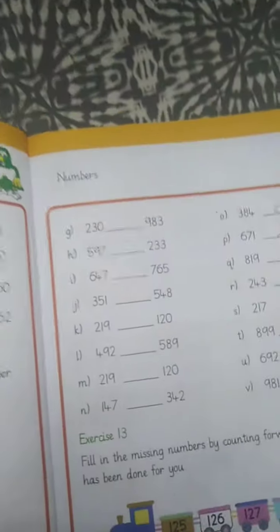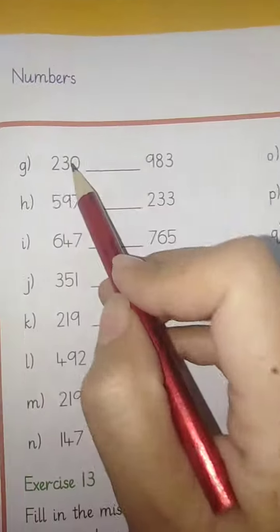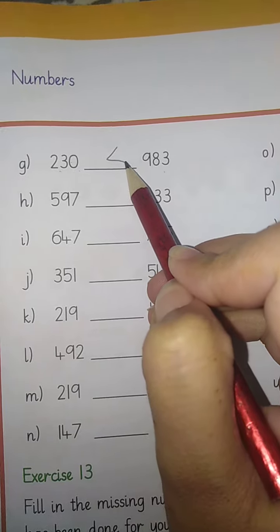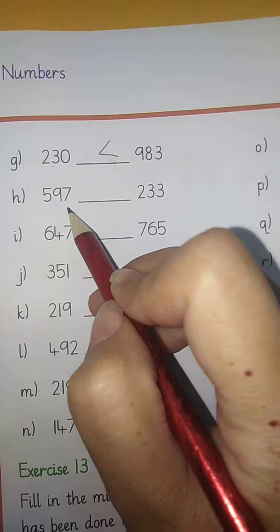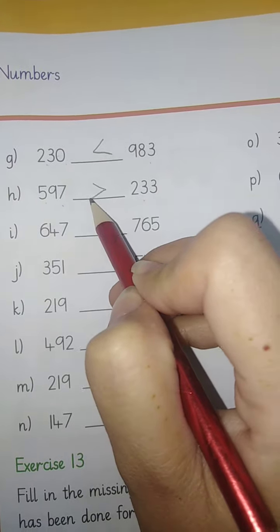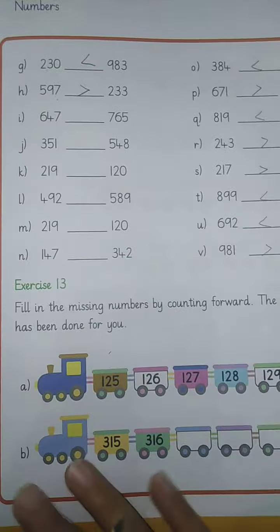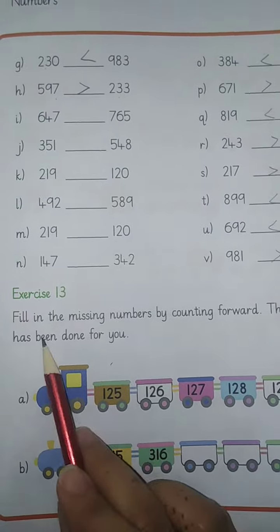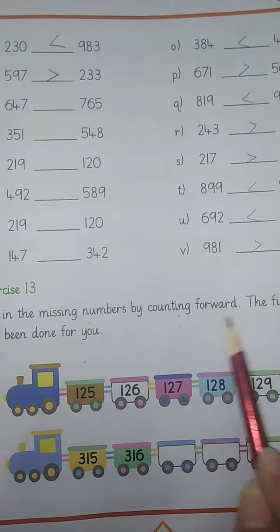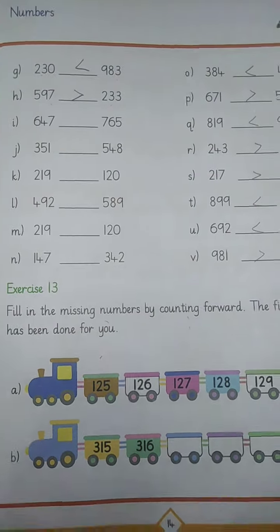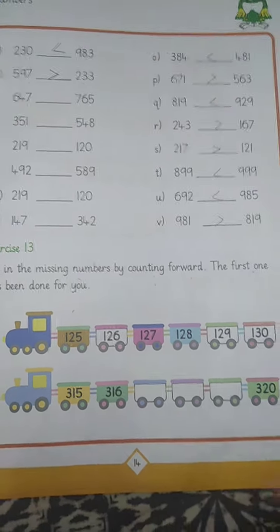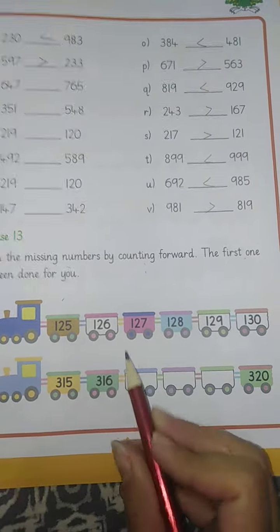Next page. We will open to exercise number 13. Fill in the missing numbers by counting forward. The first one has been done for you. We have counted numbers and we have to fill them in these blocks. The first one is done.